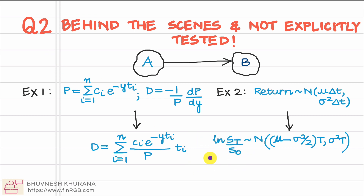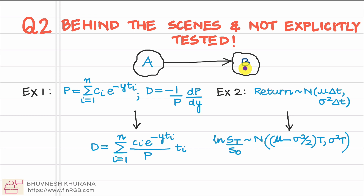As far as question 2 is concerned, remember that a lot of the math helps you transition from point A to point B. Knowledge of this math is valuable if you want to build a solid understanding of the FRM curriculum, but if you are purely focused on the FRM exam, then what matters is how well you understand the final results given in the curriculum.